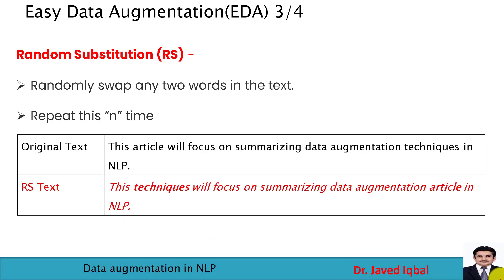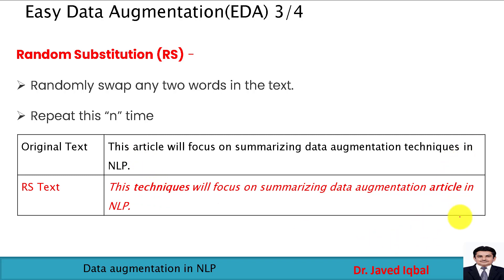The next easy data augmentation technique is random substitution. Here we randomly swap any two words in the text and repeat this process N times. Using the same original text, after applying random substitution, we replace 'article' with 'technique' and 'technique' with 'article' — the words are randomly swapped. Keep in mind that after swapping, the meaning of the sentence should not be changed. The new sentence is: 'this technique will focus on summarizing data augmentation article in NLP.'